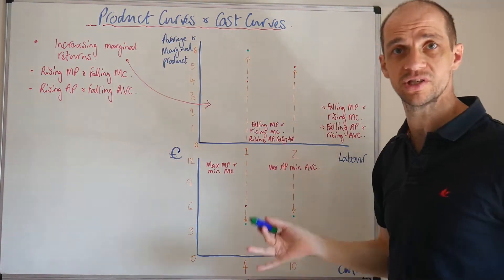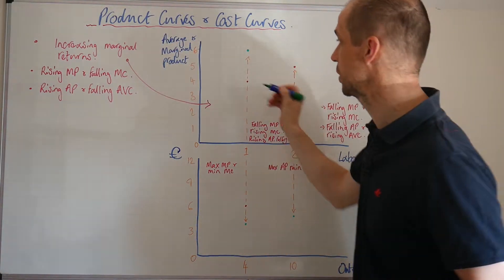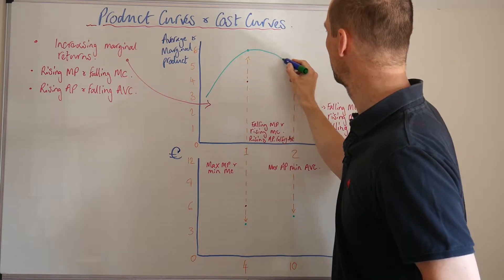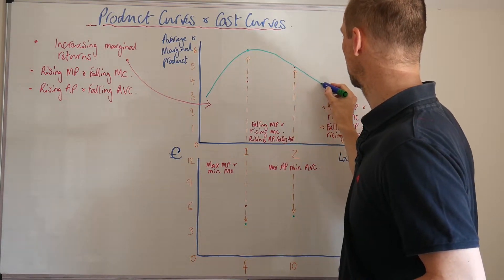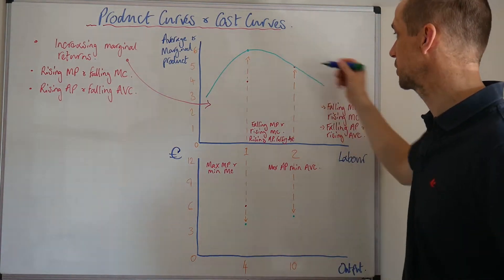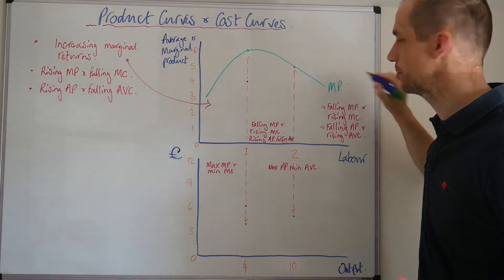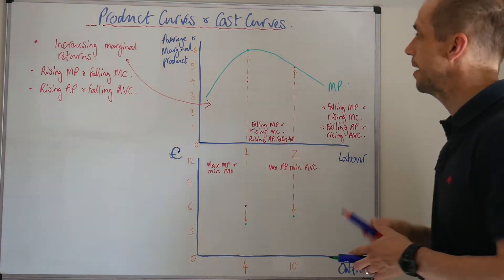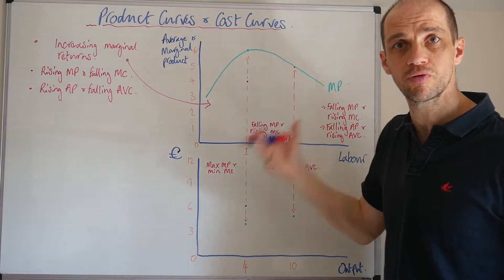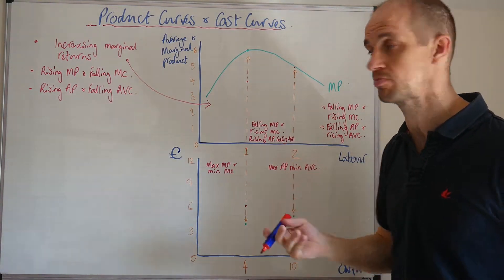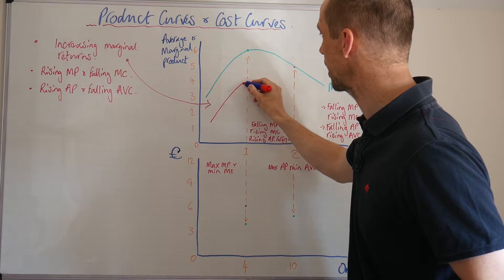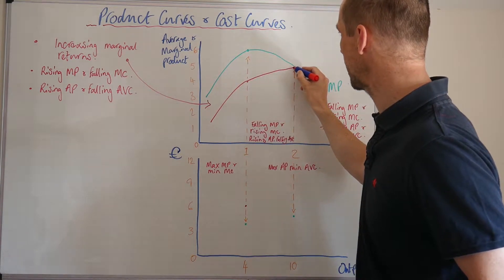Now initially we saw there's increasing marginal returns, so the marginal productivity rises before then beginning to fall and we can therefore see falling marginal product taking place. Meanwhile, the marginal product will pull up the average product.